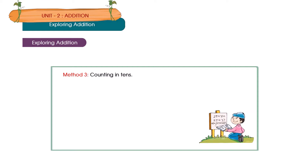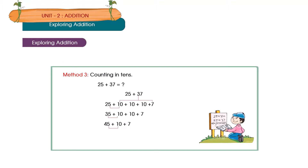Method 3: Counting in Tens. 25 plus 37 is equal to how much? We break 37 into tens and ones: 25 plus 10 plus 10 plus 10 plus 7. 25 plus 10 equals 35, plus 10 equals 45, plus 10 equals 55. 55 plus 7 is equal to 62.